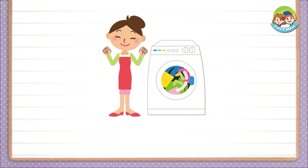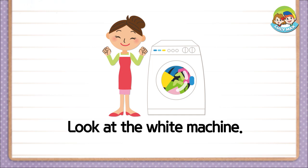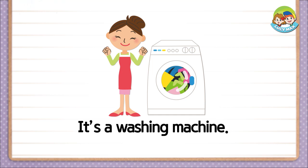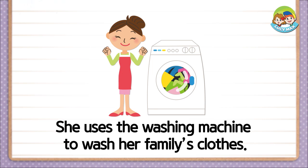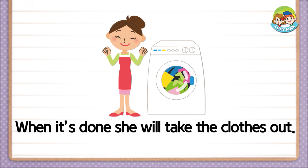You will read a story. Are you ready? Look at the white machine. Clothing is in it. It's a washing machine. She uses the washing machine to wash her family's clothes. When it's done, she will take the clothes out. Then she'll dry them over a rack.